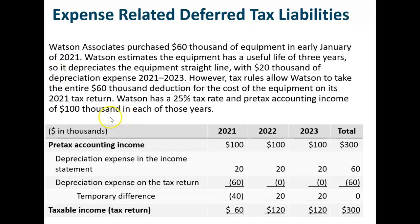As a reminder, Watson Associates purchased $60,000 of equipment in early January 2021. Watson estimates the equipment has a useful life of three years, so it depreciates the equipment using the straight-line method with $20,000 of depreciation expense in each year 2021, 2022, and 2023. However, tax rules allow Watson to take the entire $60,000 deduction for the cost of the equipment on its 2021 tax return. Watson has a 25% tax rate and pre-tax accounting income of $100,000 in each of those years.